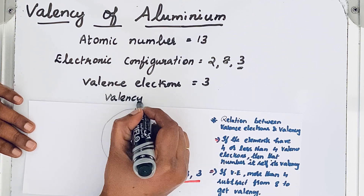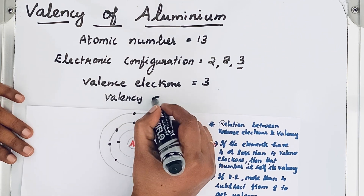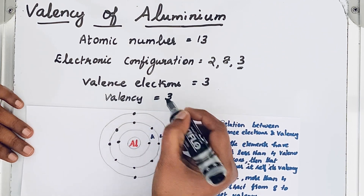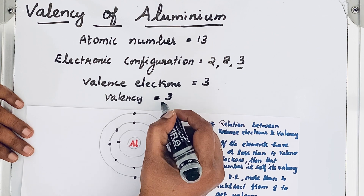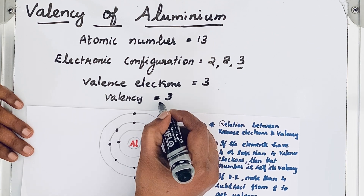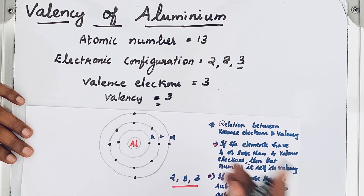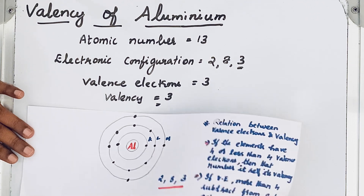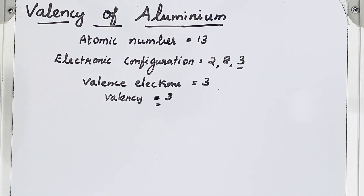The valency of aluminium is three. So the combining capacity or valence of aluminium is three. Thanks for watching.